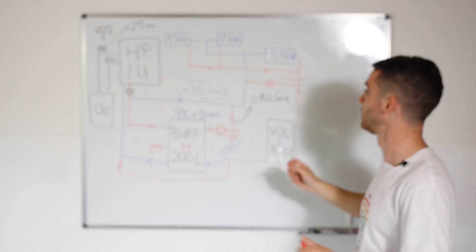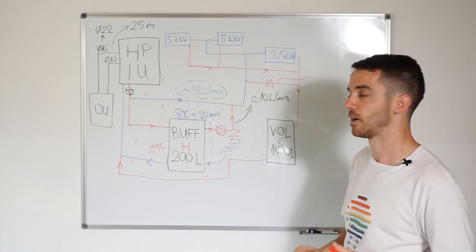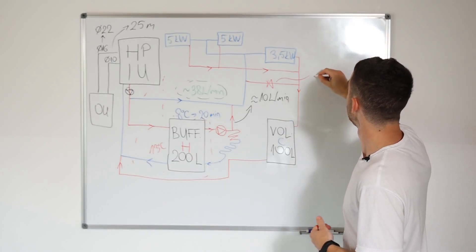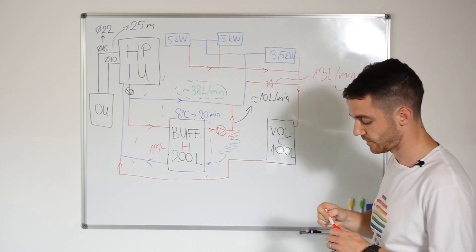So on this bypass valve, for example, on 16 kilowatt, 10 liter is much lower than minimum. So you can set up around 13 liter per minute. And in that case, you will always have enough flow rate.